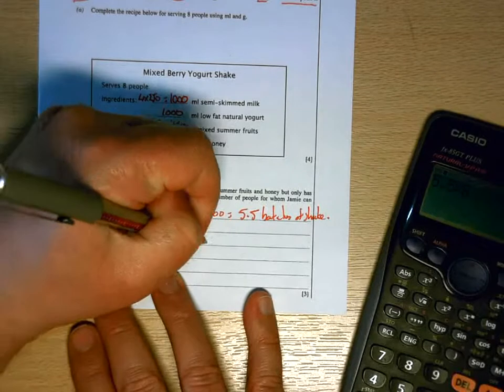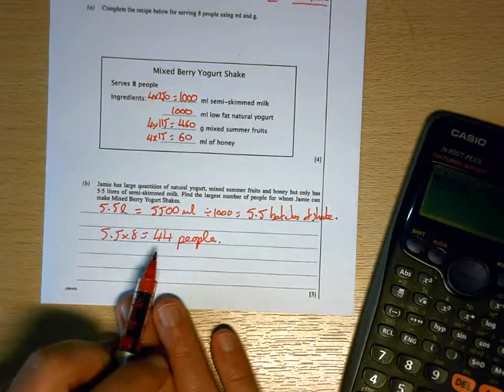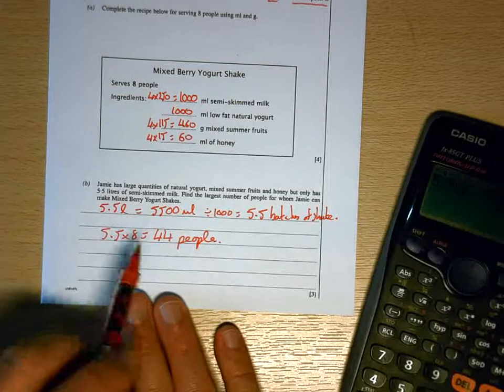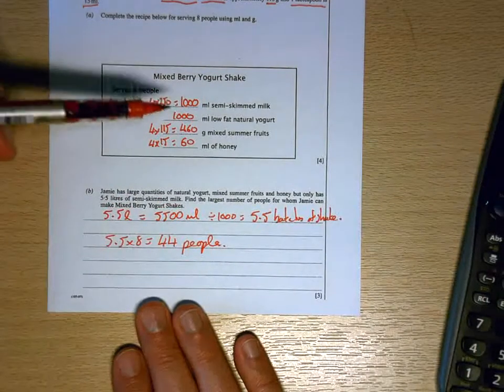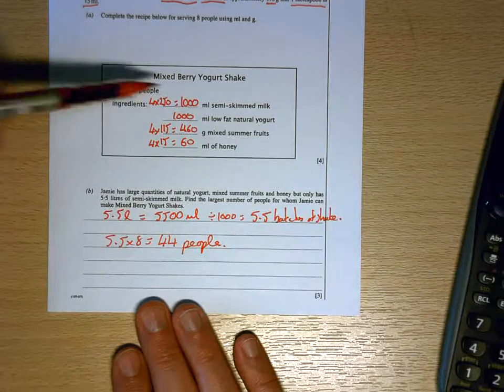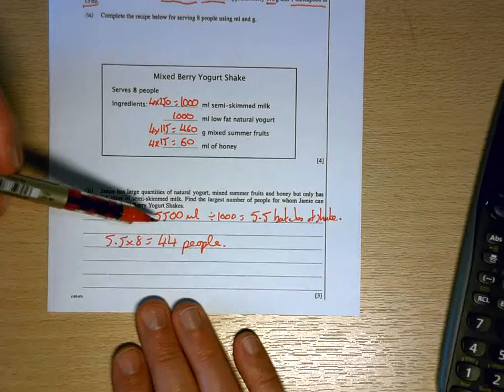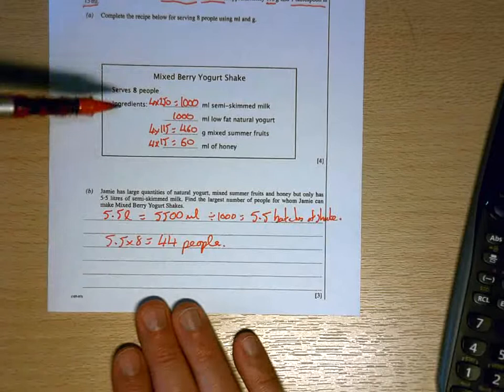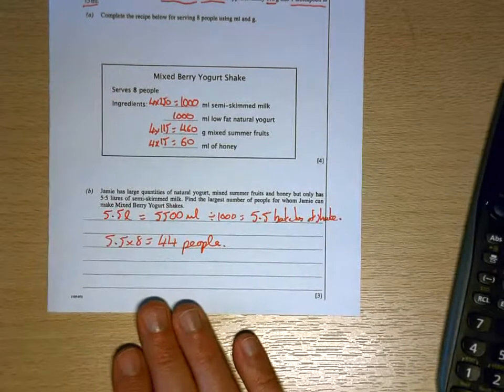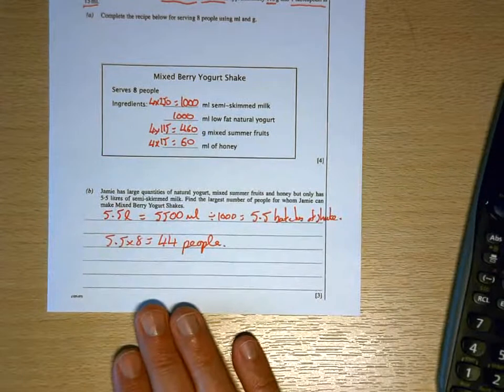Okay, just clear that again. A thousand milliliters, he needs a thousand milliliters of semi-skimmed milk for every batch he makes. He's got 5,500 milliliters, so he can make five and a half batches of the shake. Every batch he makes serves eight people, so five and a half lots of eight comes to the 44 people.